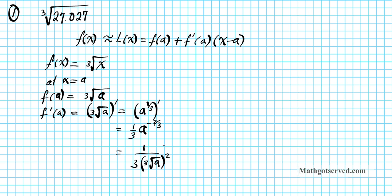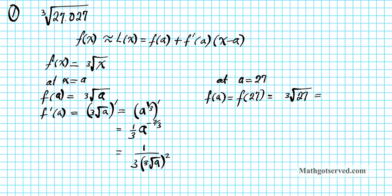So these pieces of information, f of a and f prime of a, can be used to find the linearization at any x value for this cube root function. Now what if we want to fix it to a equals 27? At a equals 27, we find f of a, which is f of 27. We evaluate the cube root at a equals 27, and the cube root of 27 equals 3.